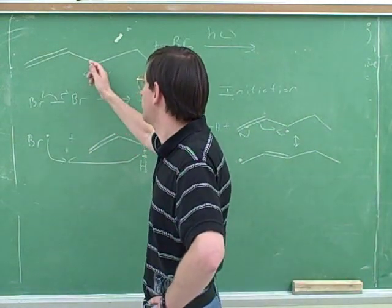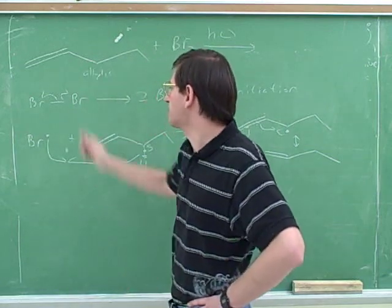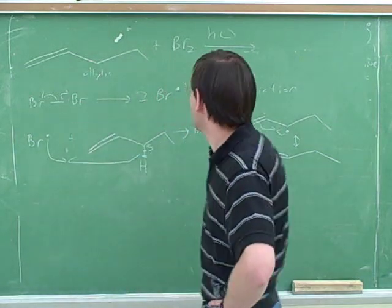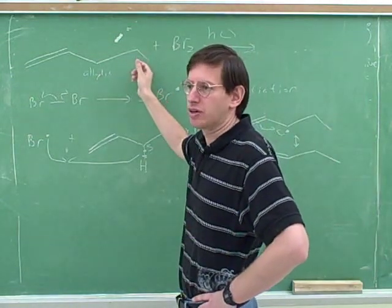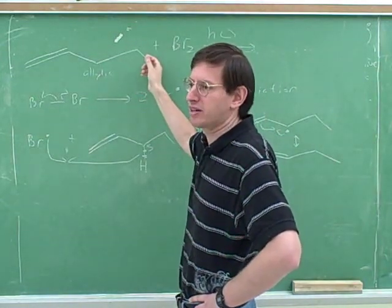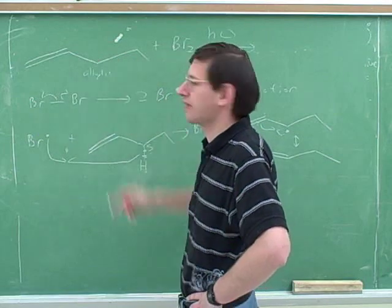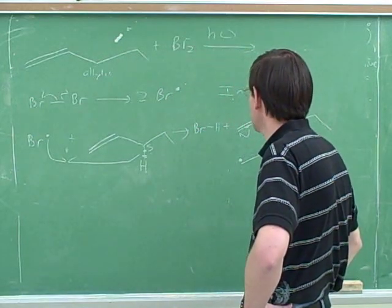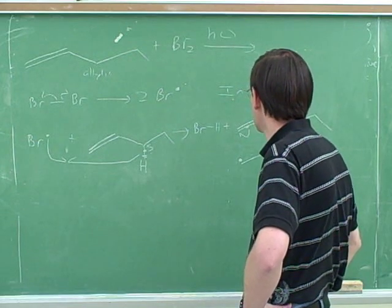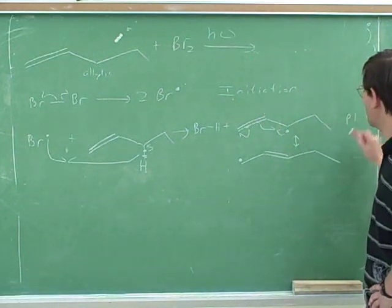So, in this type of problem, you're going to want to focus on the allylic radical. And, in fact, bromine is so selective that we're not even going to worry about attacking these two carbons. These are really not going to be possible products here. Bromine is going to prefer to just attack the allylic carbon. This was propagation step one.